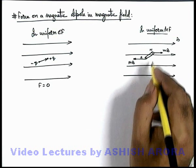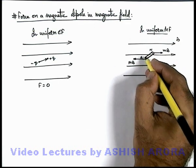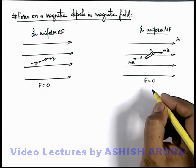So here also we can say that in uniform magnetic field when a short dipole is placed, a net magnetic force acting onto it is zero.